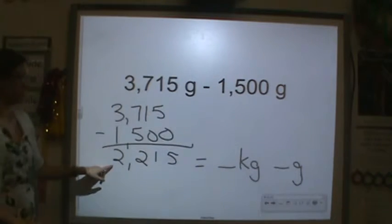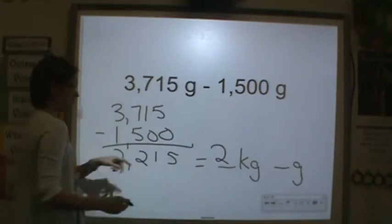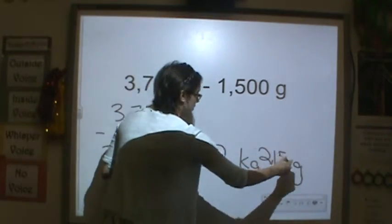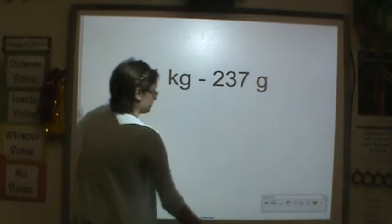So how many thousands do we have? We have 2,000s and 215 of the grams or the base unit.